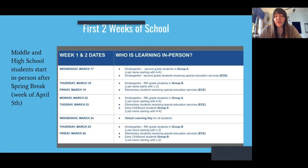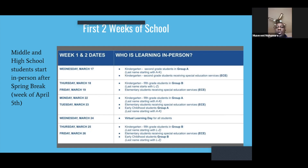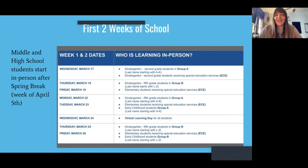In general, if your child has a last name A through K, they will be in Group A. If your child receives special education services, call KRM for your child's schedule.